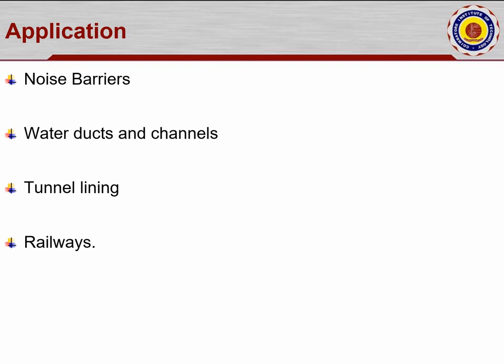Applications of glass fiber include noise barriers — the thin shape helps reduce decibels. Water ducts and channel sections are used for irrigation purposes, where seepage is arrested by arresting minor hair cracks. Tunnel lining is another application. In railways, vibration felt on the platform can also be arrested by using these types of fibers.